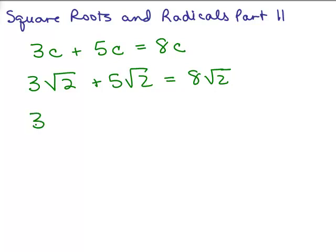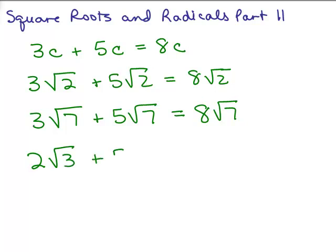Let's do another one. How about 3 square root of 7 plus 5 square roots of 7? Again, since you have exactly the same thing under the radical, you can add the coefficients. That's 8 square roots of 7. Now if I have 2 square roots of 3 plus 5 square roots of 2, these are unlike radicals so they can't be combined. So this is already simplified. You can't add those together.